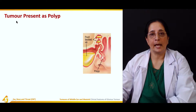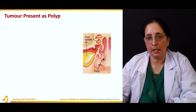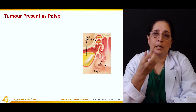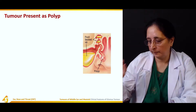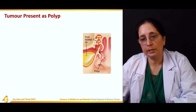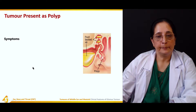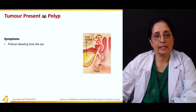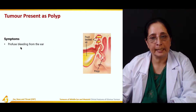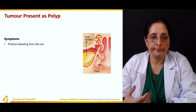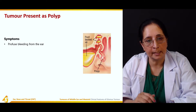When the tumor is present as a polyp, it is polyp-shaped. Polyps are growths that grow from a stalk — they are attached with the help of a stalk. The main symptom of a tumor presenting as a polyp is profuse bleeding from the ear, as polyps are hanging tumors that bleed easily.